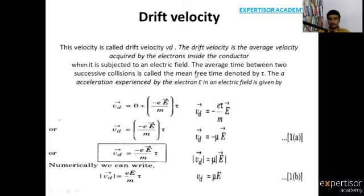The average time between two successive collisions is called the mean free time, denoted by tau (τ). Electrons are moving inside the conductor, and at any moment two electrons will definitely collide. The time between two successive collisions is called mean free time, denoted by τ. The acceleration experienced by the electron is denoted by a.